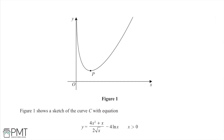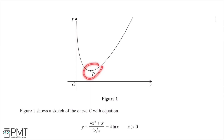In this question, we're shown figure one, which is a sketch of the curve C. The curve has the equation y = (4x² + x) / (2√x) − 4ln(x), valid for x > 0. We can see a parabola-like shape, and we notice a point which looks like a turning point of this function.